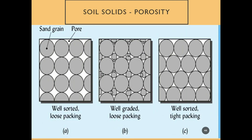Looking at some comparative pore spaces, we have well-sorted but loosely packed sand on the left. In the middle, we have large sand particles with some silt and clay between them, and we see how pore sizes shrink considerably once we add those finer separates.